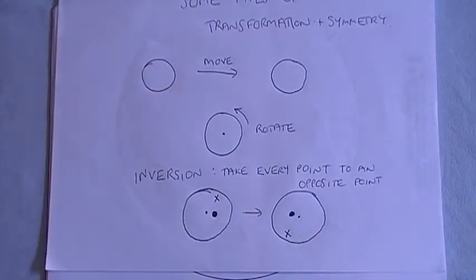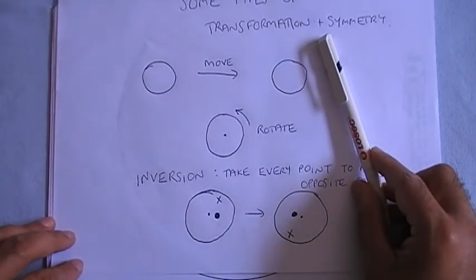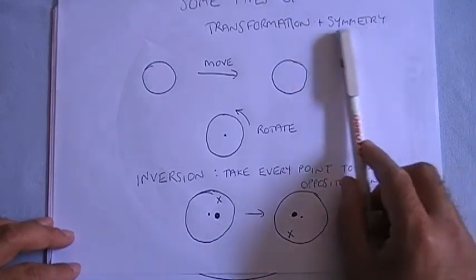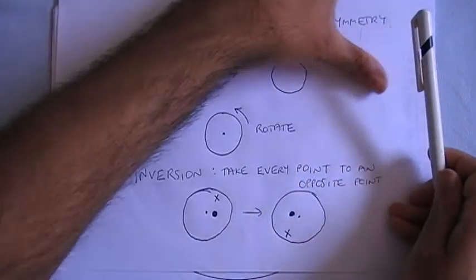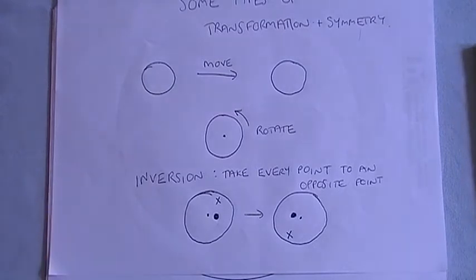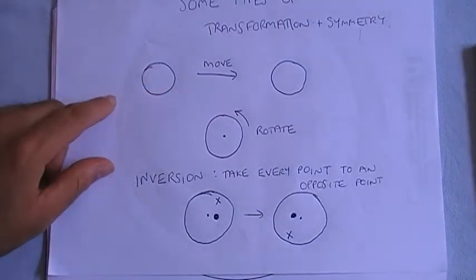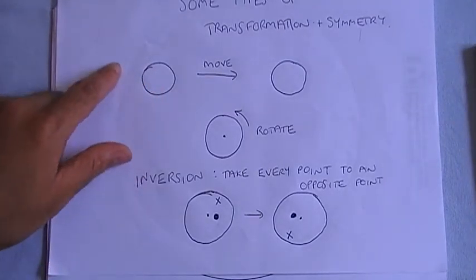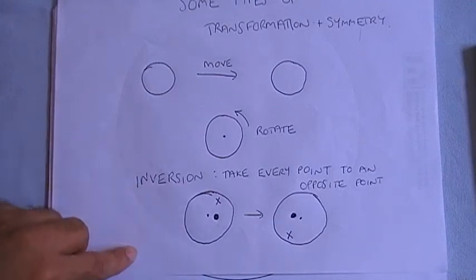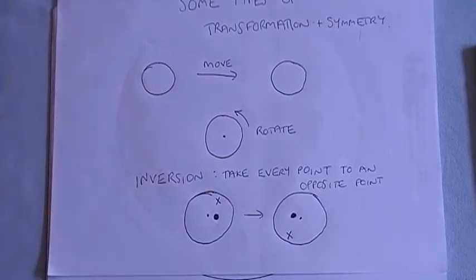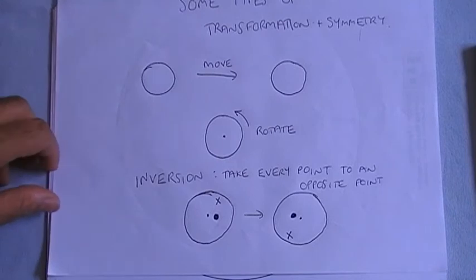So these are some possible transformations. Of course, there are many others and you can probably think about some yourselves. But the transformations are very important for the study of geometry and mathematics and science because of a notion of symmetry. So what do we mean by symmetry? Well, a shape is said to be symmetric under these transformations if it looks exactly the same once you've done the transformation.